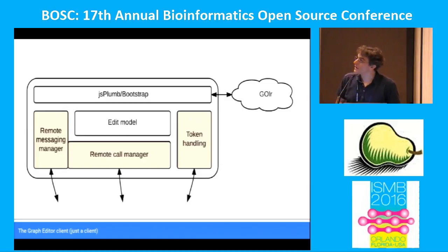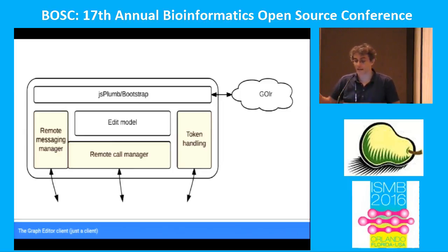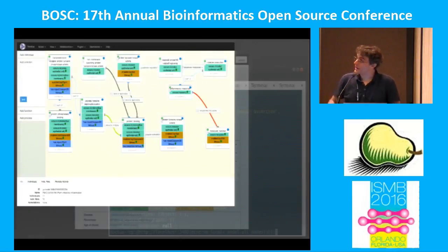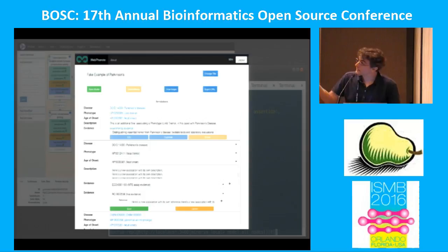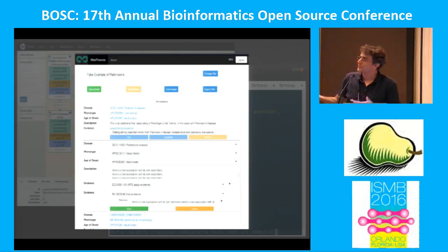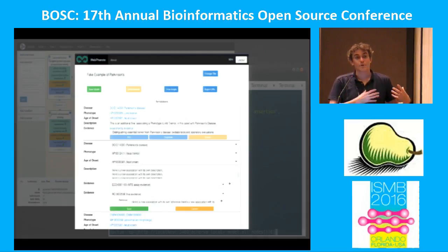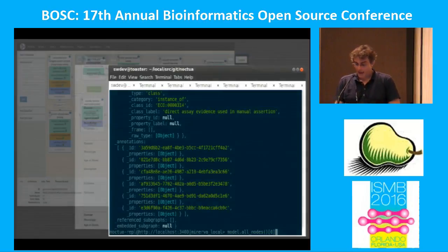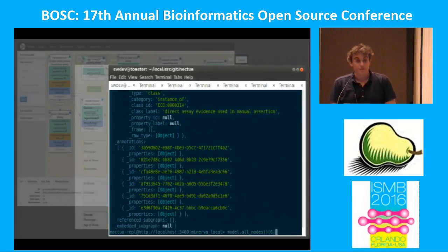The client we wrote for the graph uses JS Plumb and Bootstrap — all JavaScript libraries you can grab online. Everything's on GitHub. It also communicates with our Solr server called GOlr for the Gene Ontology to do autocomplete. It's all plug-and-play, mix and match. Here's the graph client as I showed you. We also have a client being built for the Monarch Initiative for rare disease phenotypes — a tabular format for people who don't want to mess around with graphs, where they just put in phenotype, disease, age of onset, and it builds the same graph model on the backend. The user isn't any the wiser, but we're still capturing that very rich information. There's also an example of the REPL API for manipulating and prototyping.